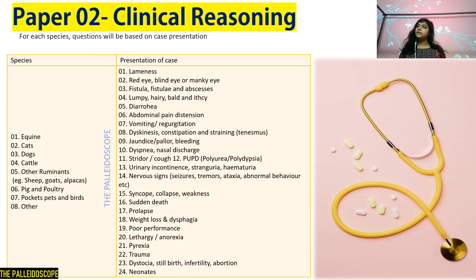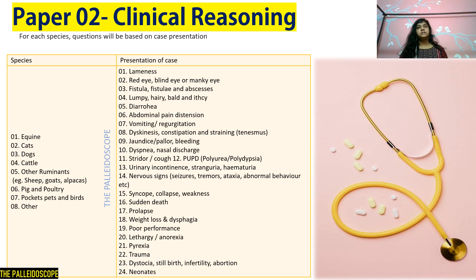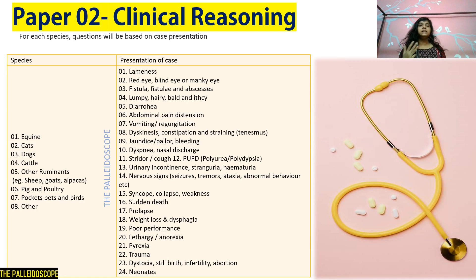Paper 2 — clinical reasoning: for each species, questions will be based on case presentation. The species you must focus on are equine, cats, dogs, cattle, other ruminants, pigs, poultry, pocket pets, birds, and others.